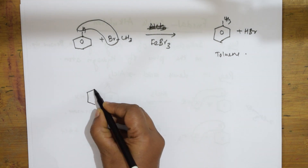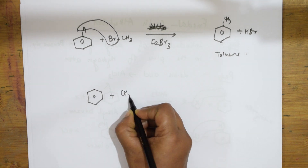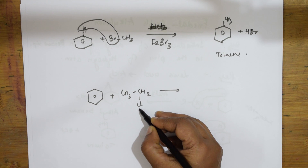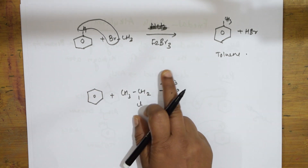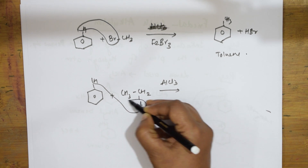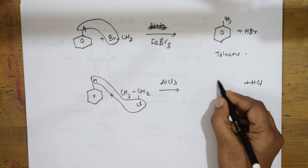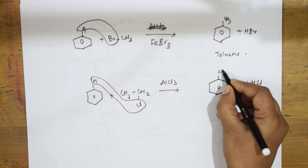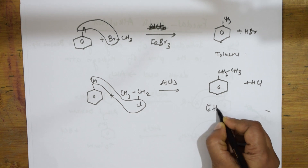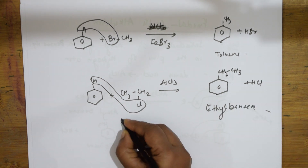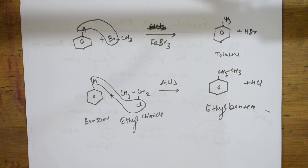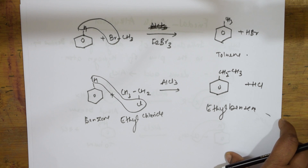One more example: take benzene and ethyl chloride (CH₂CH₃Cl). Whenever you see chlorine, introduce AlCl₃; whenever you see bromine, use FeBr₃. The hydrogen and the chlorine come out as HCl, and the ethyl group CH₂CH₃ attacks the ring, giving ethyl benzene. All these reactions are called Friedel-Crafts alkylation reactions.